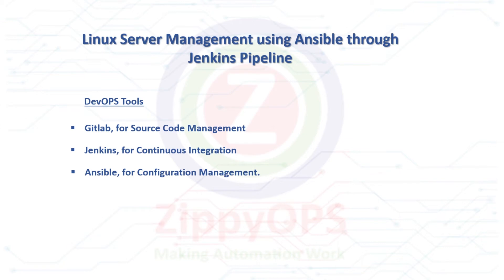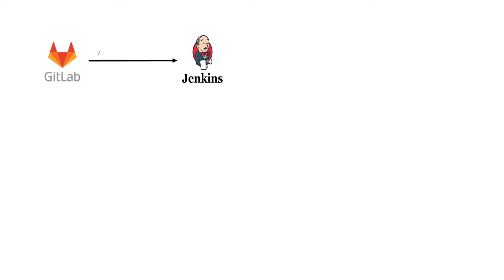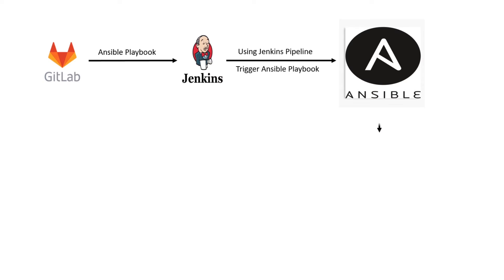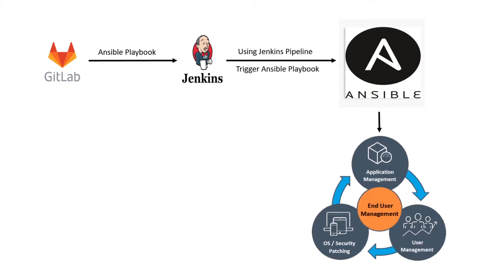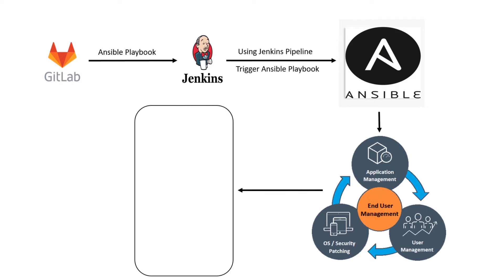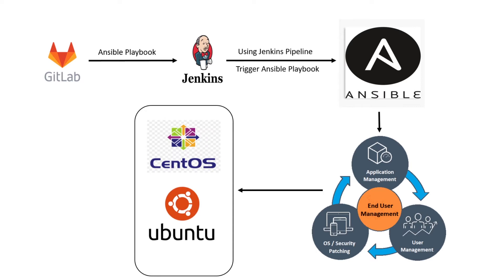Let's explore the workflow of Linux Server Management for CentOS 7 and Ubuntu 18. Jenkins' job will trigger the Ansible playbook in the Ansible controller, which will perform the following tasks: application installation, application upgrade, OS patching, and creating a user on Linux machines. Now let us see how the Linux Server Management happens via the Jenkins pipeline.